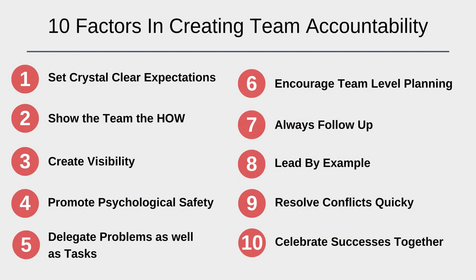In summary, we've gone through 10 factors in creating team accountability — these are not exhaustive. Implement as many as possible when holding employees accountable for their work, their behaviour and their actions. The 10 factors are: set crystal clear expectations; show the team the how; create visibility; promote psychological safety; delegate problems as well as tasks; encourage team level planning; always follow up; lead by example; resolve conflicts quickly; and celebrate successes together. If you have any questions, please leave them in the comments section below. Thanks very much for watching and I look forward to speaking to you again soon.